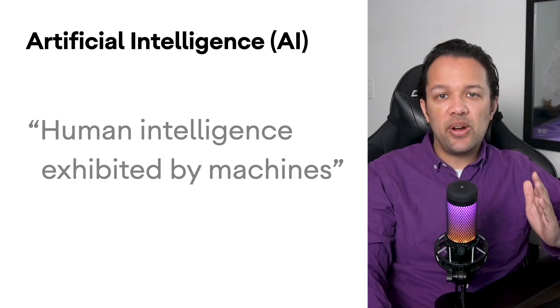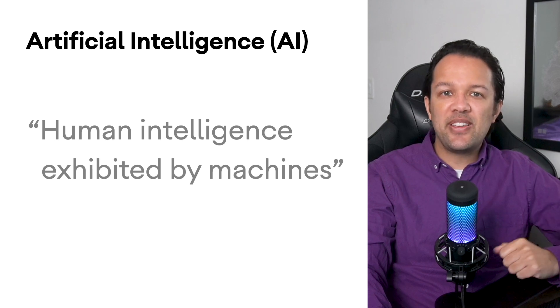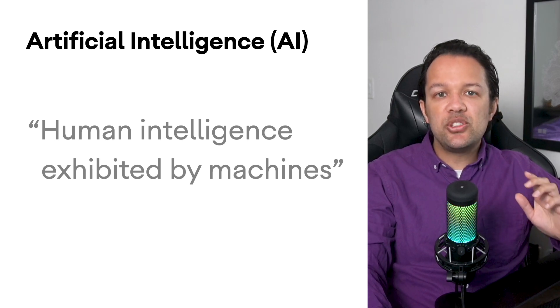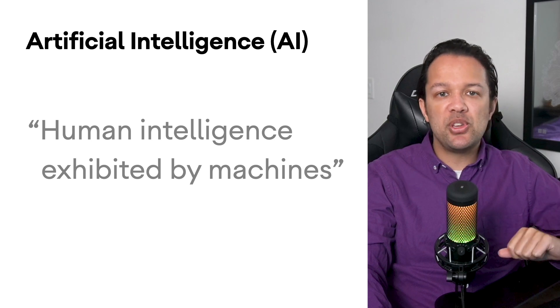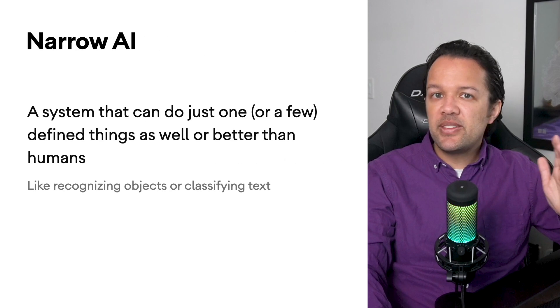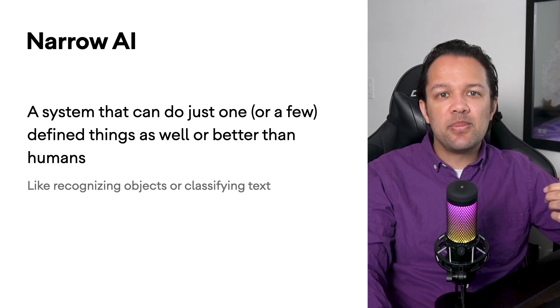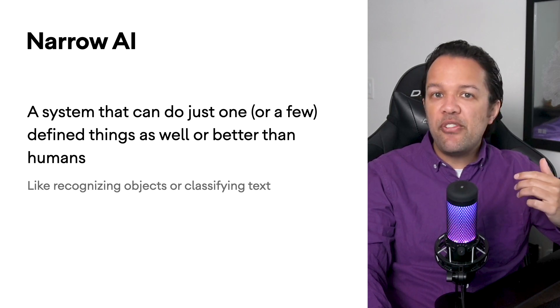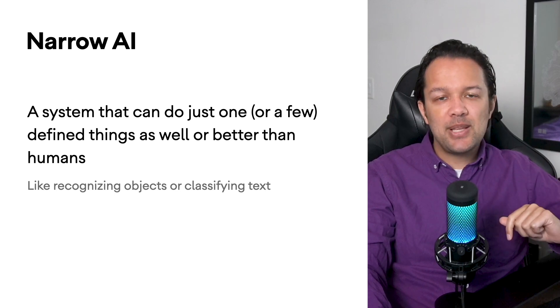You may have heard of a number of terms related to this field of study, things like artificial intelligence, machine learning, or even deep learning. Artificial intelligence, or AI for short, is essentially the science of making things smart. More formally, it can be defined as human intelligence exhibited by machines. But this is a very broad term, and right now we're actually creating systems that are a form of narrow AI — a system that can do one, or maybe a few things, as well or better than a human expert for that task.